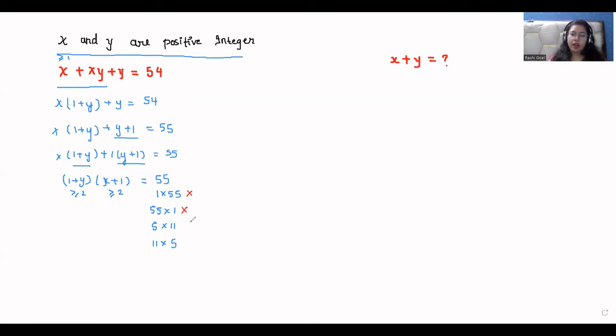Now two cases are left. Either the factors will be 5 and 11, or 11 and 5. We have to choose only these two cases. In the first case, 1 plus y equals 5, so y will be 4. And when 1 plus x equals 11, the value of x will be 10. In the next case, when 1 plus y equals 11, the value of y will be 10, and x will be 4.